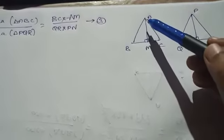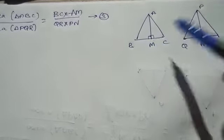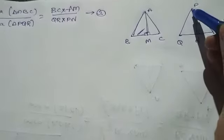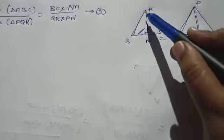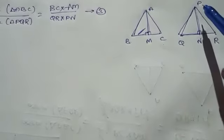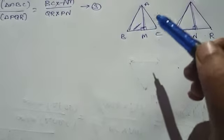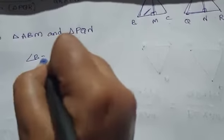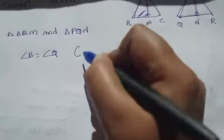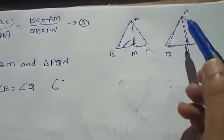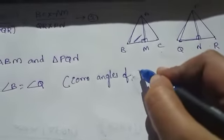Now consider triangles ABM and PQN — these are the smaller triangles. We know triangle ABC is similar to triangle PQR. If two triangles are similar, the corresponding sides are in proportion and corresponding angles are equal. Therefore, angle B equals angle Q — corresponding angles of similar triangles.